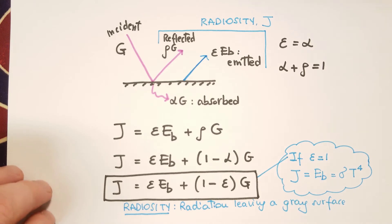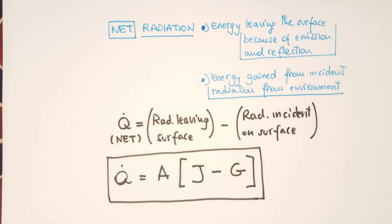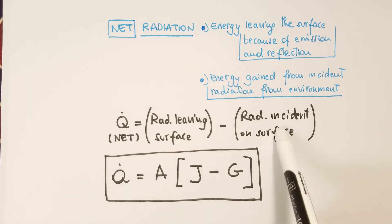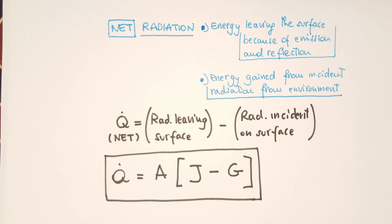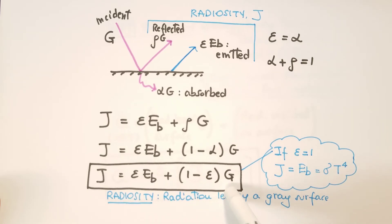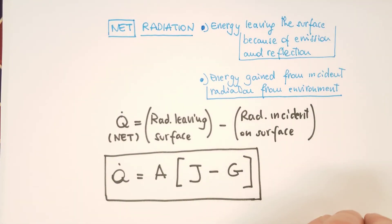But what's the actual net radiation that a surface, a gray surface, experiences? Well, that must be the difference between the energy that leaves the surface by radiation because of emission and reflection, that's the radiosity, minus the energy gained from the incident radiation from the environment, from other surfaces. So the net is Q equal to A times the difference between the radiosity J and the incident radiation G. But G has an expression. We can find a useful expression by rearranging this equation. So we solve this equation for G, and we substitute here. So we eliminate G from here.